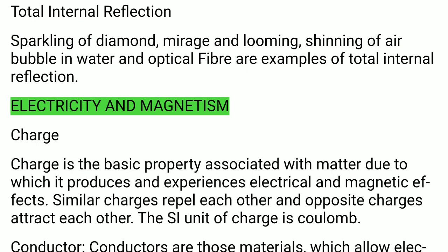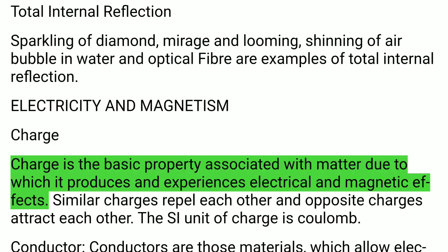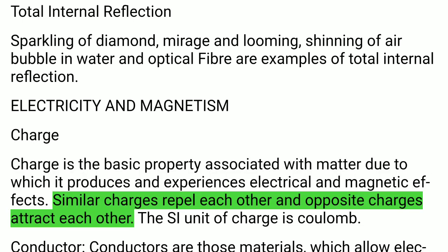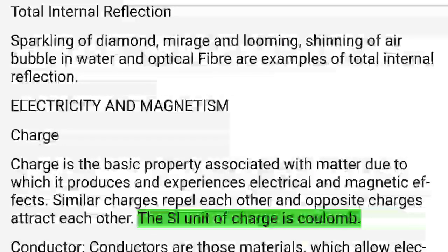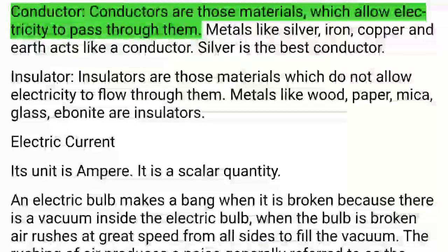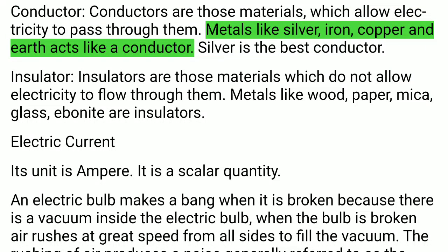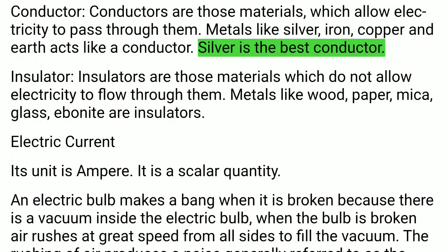Electricity and Magnetism — Charge: Charge is the basic property associated with matter due to which it produces and experiences electrical and magnetic effects. Similar charges repel each other and opposite charges attract each other. The SI unit of charge is coulomb. Conductors allow electricity to pass through them; metals like silver, iron, copper and earth act as conductors. Silver is the best conductor.